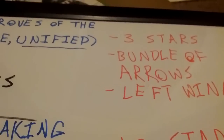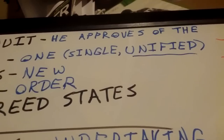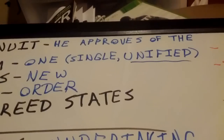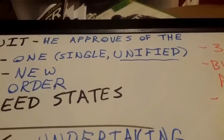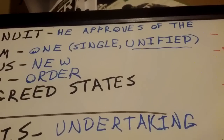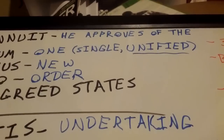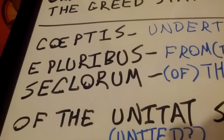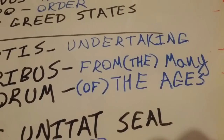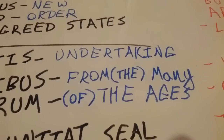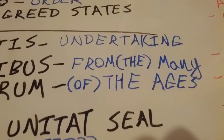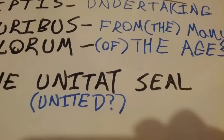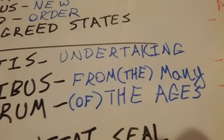With that half of the seal you see ten stars, an olive branch, the left eye of the eagle, and the right wing of the eagle. Just from the olive branch and the bundle of arrows — he approves of the single or unified new order, unified new order, or global new order possibly. Who is 'he'? That's the question. The many would be the lower class — there are a lot of us and not so many of the upper class — but I don't know what that means other than that.